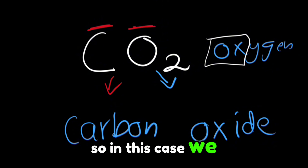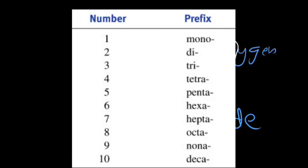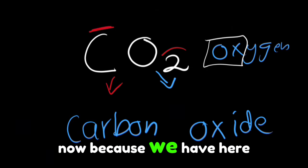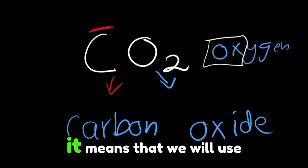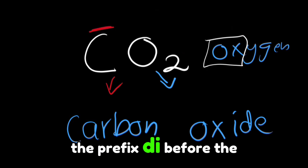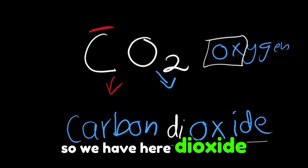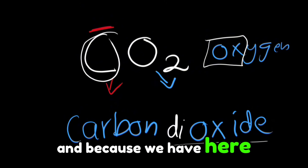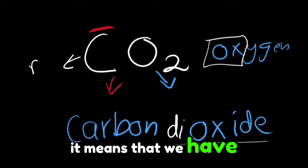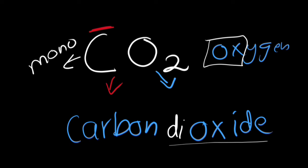In this case, we will use prefixes. Because we have two oxygens, we use the prefix di before oxygen, so we have dioxide. Because we have one carbon, that would be mono, but we never use the prefix mono for the cation. This gives us carbon dioxide.